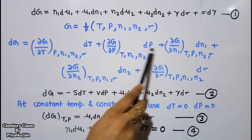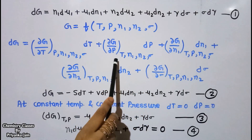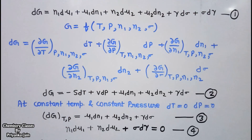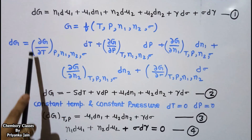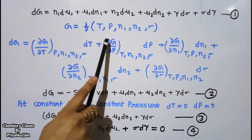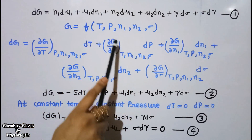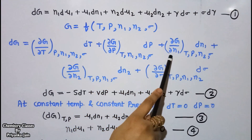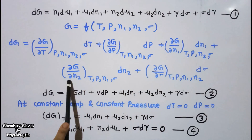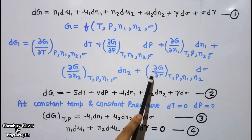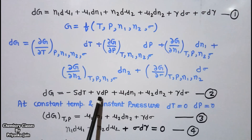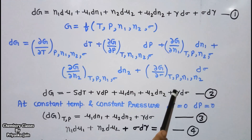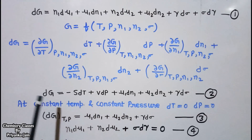From thermodynamics, we know that ∂G/∂T = −S (entropy), ∂G/∂P = V (volume), ∂G/∂n₁ = μ₁, ∂G/∂n₂ = μ₂, and ∂G/∂σ = γ. Substituting these values gives equation two: dG = −SdT + VdP + μ₁dn₁ + μ₂dn₂ + γdσ.